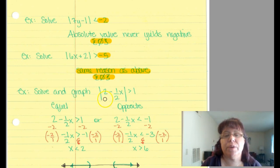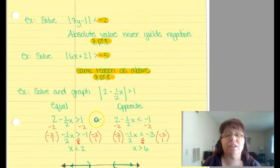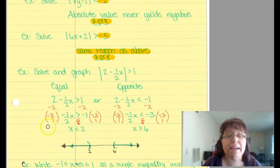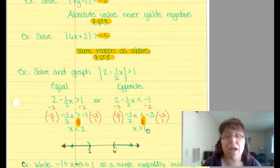Let's solve and graph the absolute value of 2 minus one-half x is greater than 1. It's greater than 1, so that's okay. The first term is just removing the absolute value. The second inequality is going to be the opposite: right now it's greater than, it becomes less than, and 1 becomes negative 1. Subtract 2 from both sides on each. Remember, you're multiplying by a negative number so you flip the sign: x is less than 2. Working on the opposite side, multiply by negative 2 and flip the sign: x is greater than 6. No equality, so rounded parentheses — off to the left and off to the right.